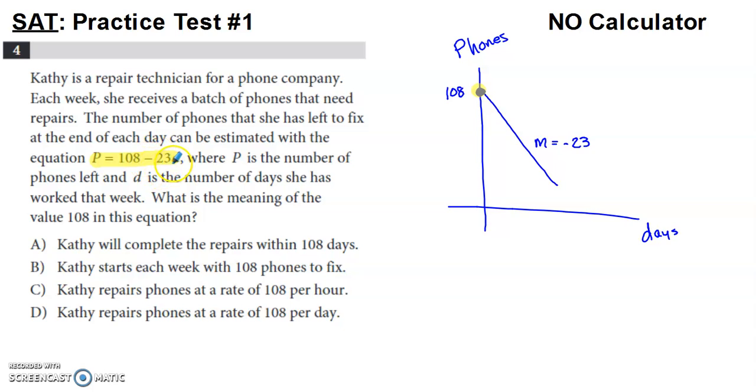The rate that she's repairing phones is 23 per hour. The number that she has to fix over the course of the week, so it's the number she starts with, is the value of b from slope intercept form. So she's starting the week with 108 phones to fix.